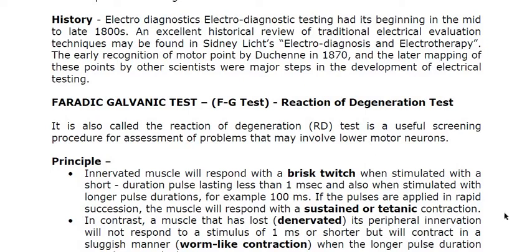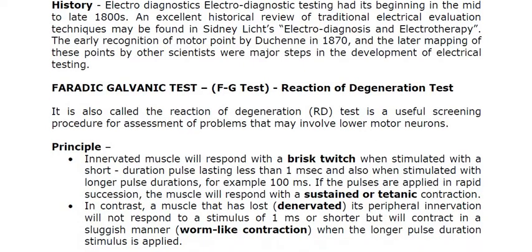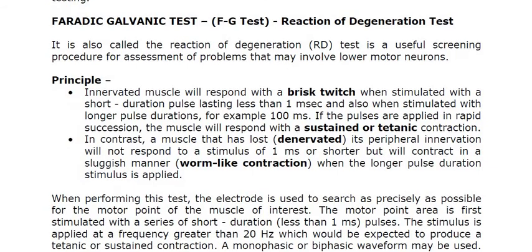Now coming to the first test, which is the Faradaic-Galvanic test — the acronym is FG test. The expanded form is Faradaic-Galvanic test. This test is primarily done to clinically assess the reaction of degeneration, so it is also known as the RD test or reaction of degeneration test.